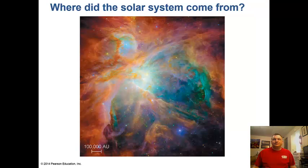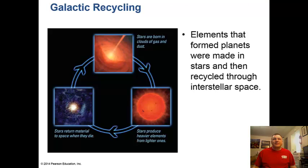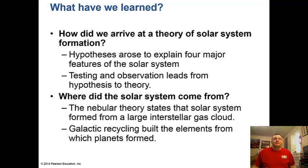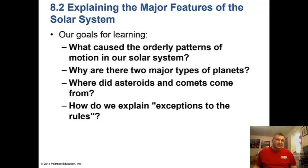Where did the solar system come from? The elements forming the planets were made in stars and recycled through interstellar space through supernova explosions. We can see stars forming in other interstellar gas clouds like the Orion Nebula, which lends support to the solar nebula theory. The solar nebula theory states that the solar system formed from a large interstellar gas cloud, and galactic recycling built the elements from which the planets formed.